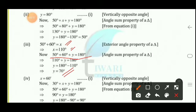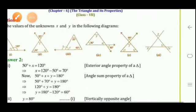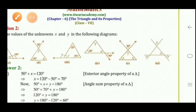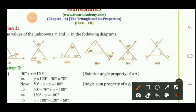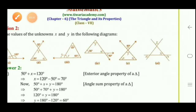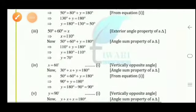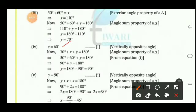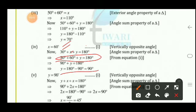Part 5 — 90° is given, and both remaining angles are x. y = 90° by vertically opposite angles. Using angle sum property: y + x + x = 180, so 90 + 2x = 180, giving 2x = 90, therefore x = 45°.